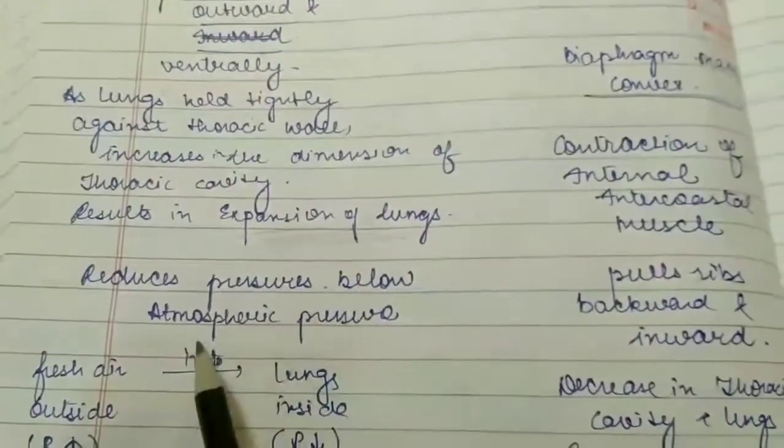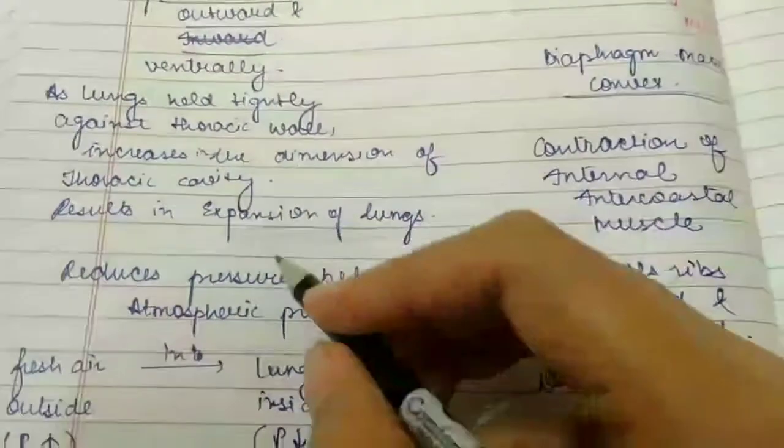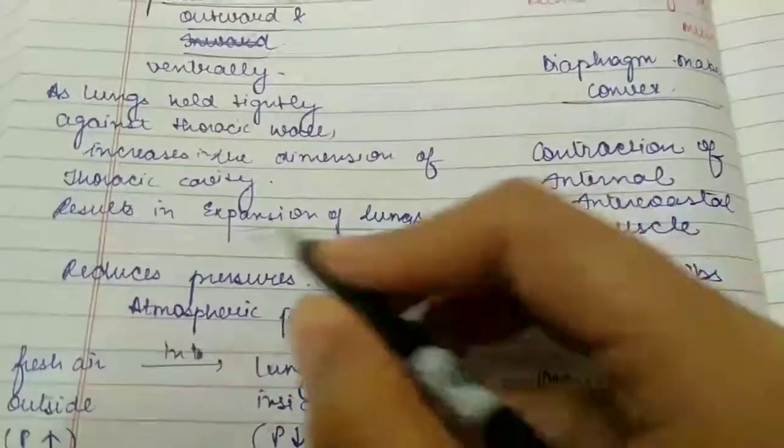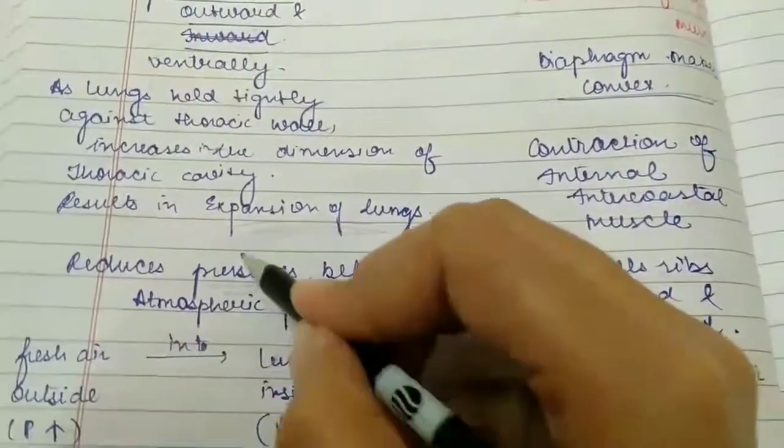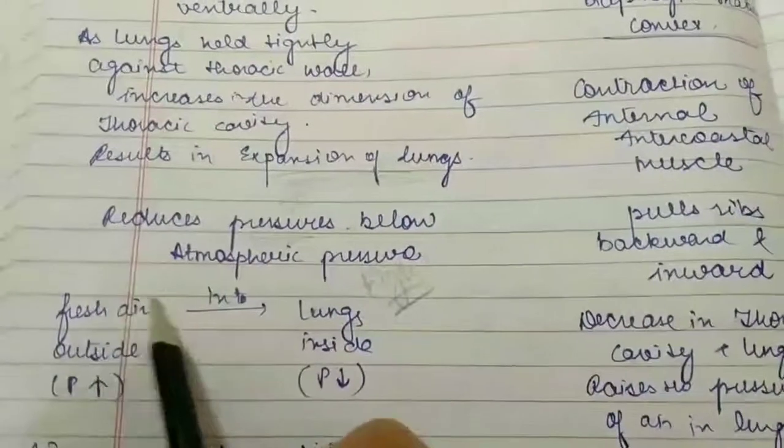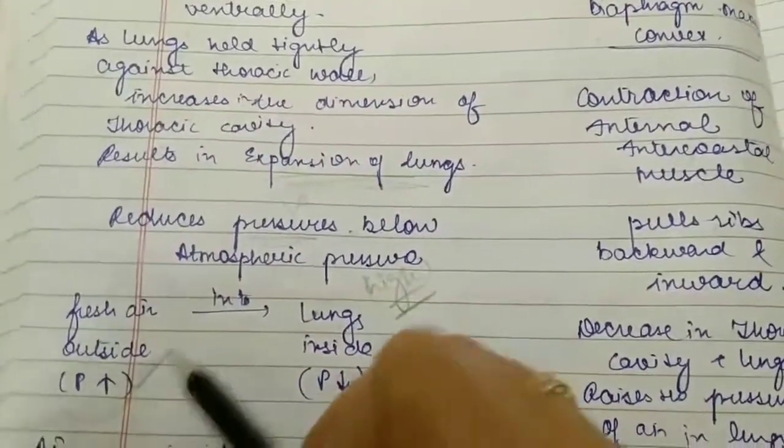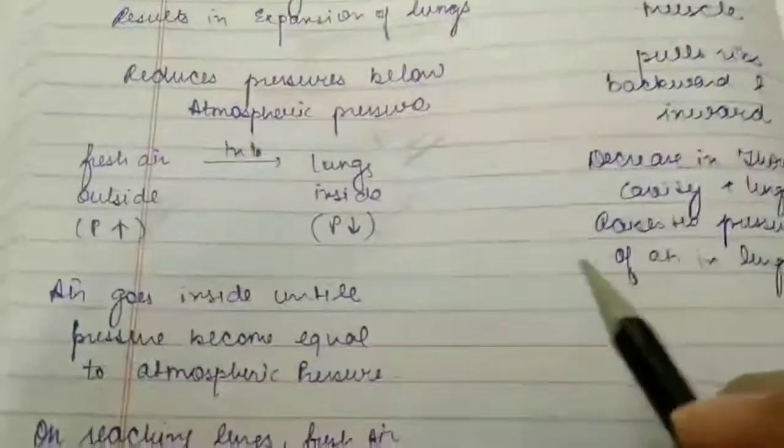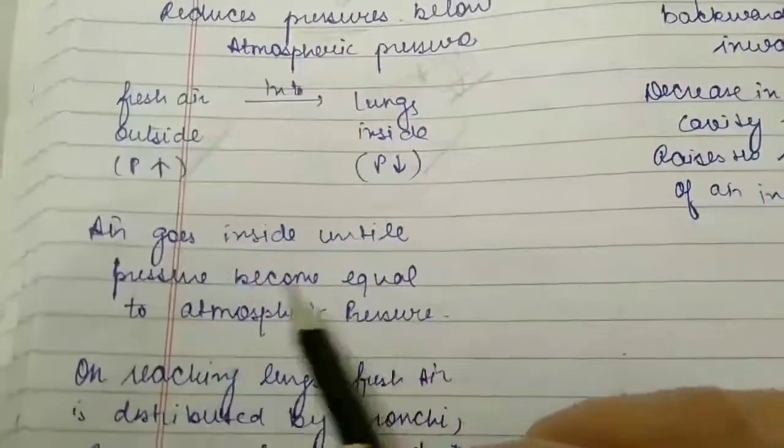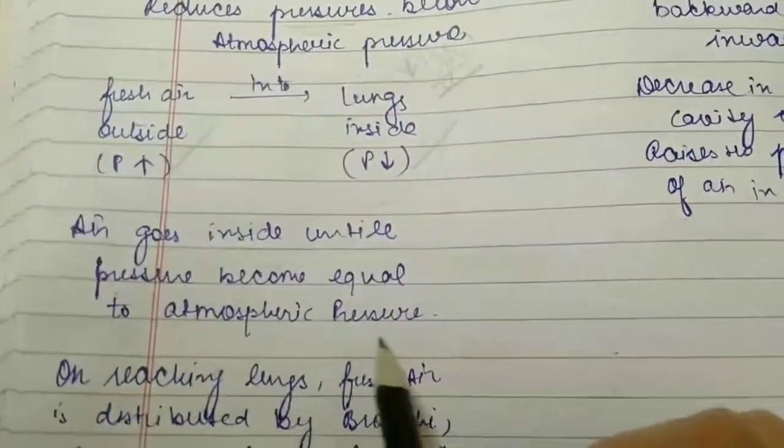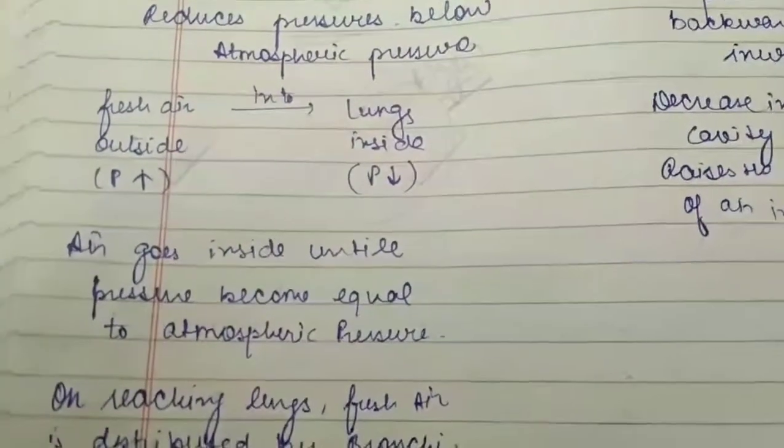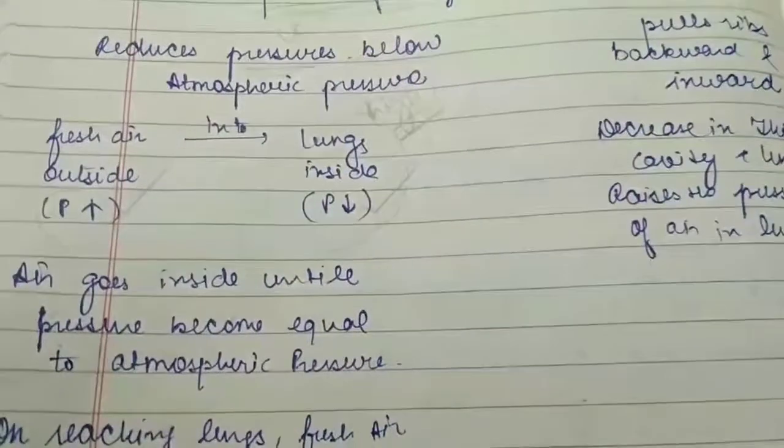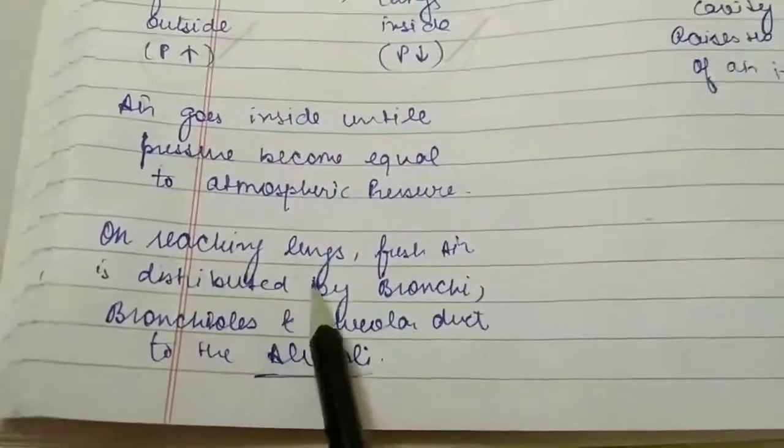It reduces pressure below atmospheric pressure. Therefore, atmospheric pressure is high and lung pressure is low. From high pressure to low pressure, air goes inside the lungs until pressure becomes equal to atmospheric pressure. Air goes inside until the pressure becomes equal to the atmospheric pressure.